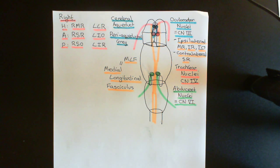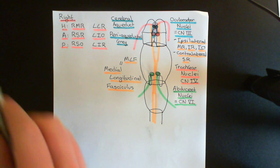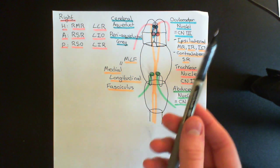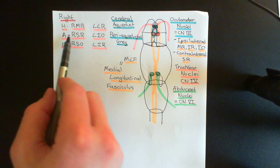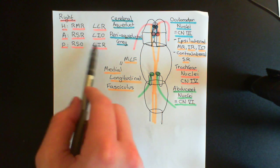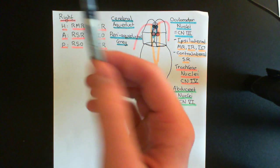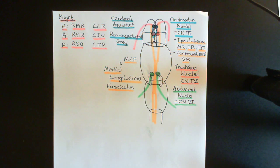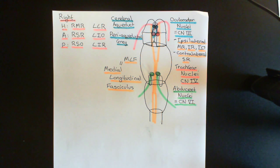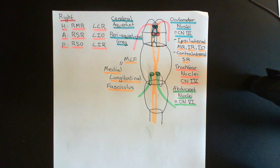In the next video, I'll show how the horizontal semicircular canal on the right connects to the right medial rectus and left lateral rectus, how the anterior semicircular canal connects to its two muscles, and how the posterior canal connects to its two muscles. To fully understand this, you need to acknowledge both sides, because when you rotate in a plane, two muscles are activated corresponding to the activated canal, and two muscles are inhibited corresponding to the inhibited canal.